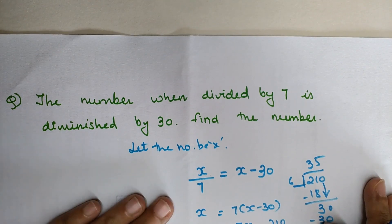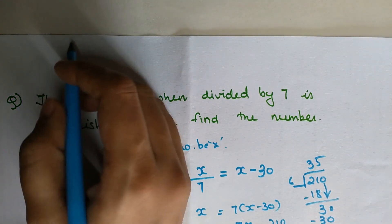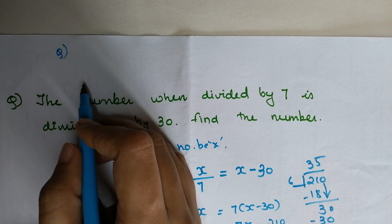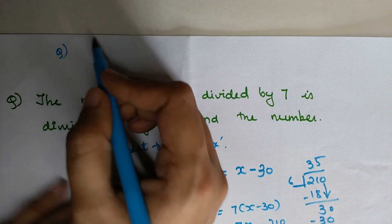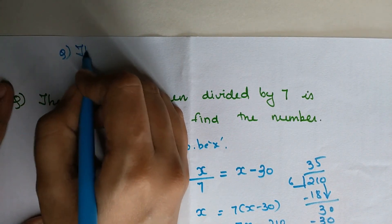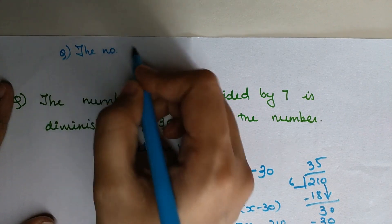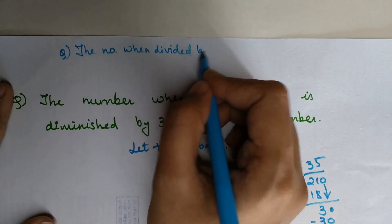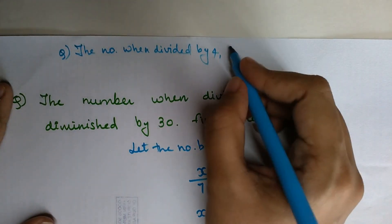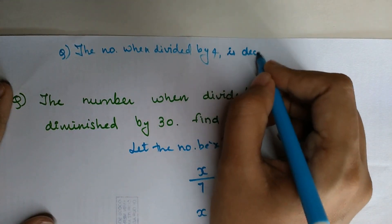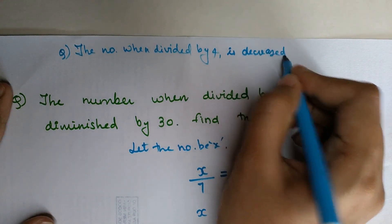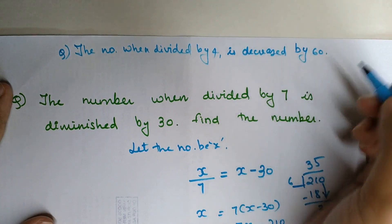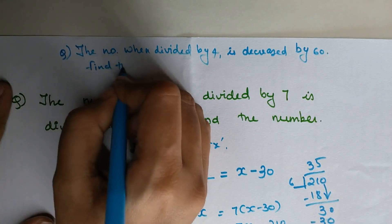Okay, so now as promised, I'll write down a question here and you let me know the answer in the comment section below: A number when divided by 4 is decreased by 60. Find the number.